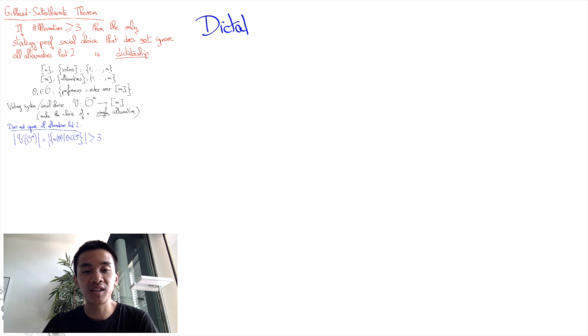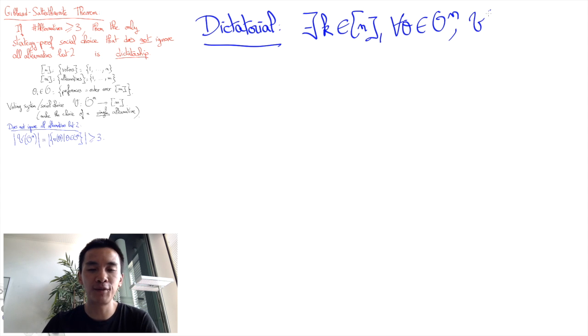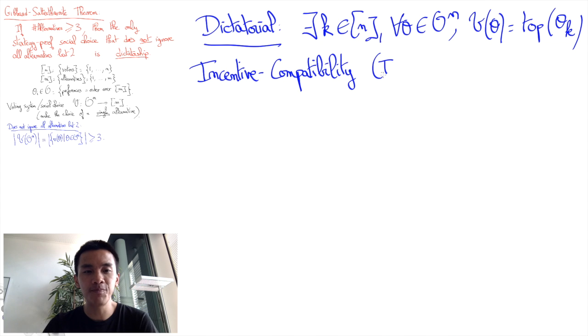The voting is dictatorial if there is a dictator K in N such that for any preference profile theta, we have V of theta equals the top alternative of theta_K. And finally, we need to define incentive compatibility, or IC, which is a bit trickier.